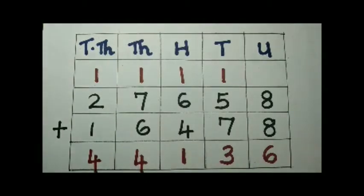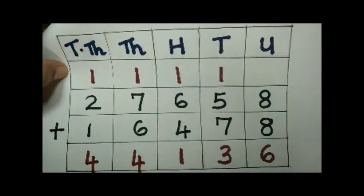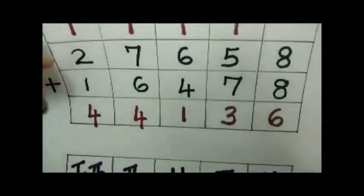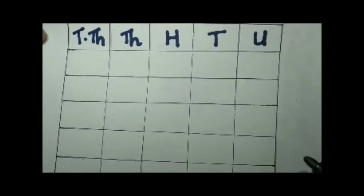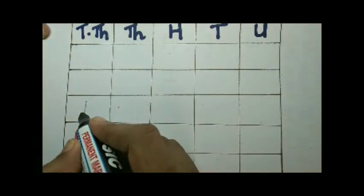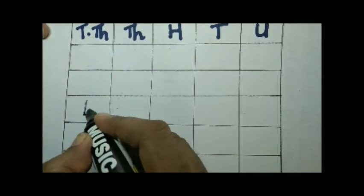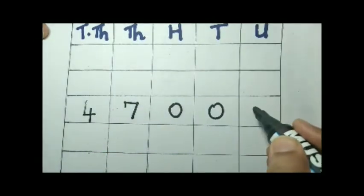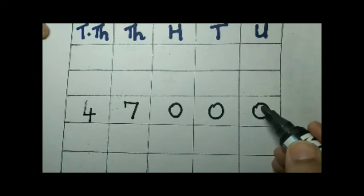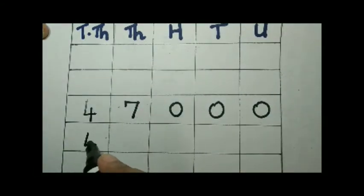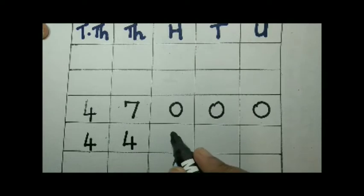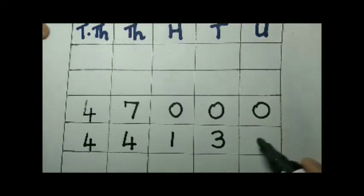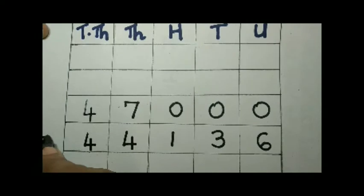Now after we get the cost of computer and printer, we begin the second operation. We write the total amount that Rohan spent, that is Rs 47,000, and we will subtract the cost of computer and printer, which is 44,136.